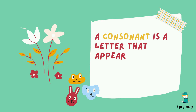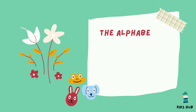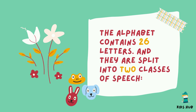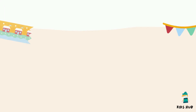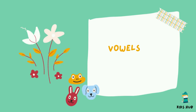A consonant is a letter that appears in every word in the English language. The alphabet contains 26 letters and they are split into two classes of speech: vowels and consonants.